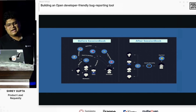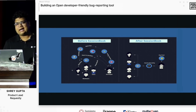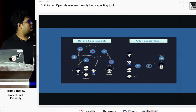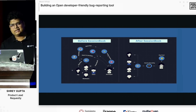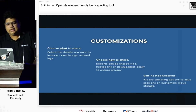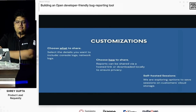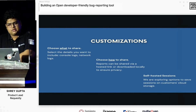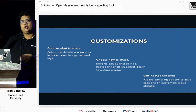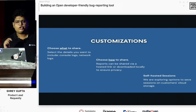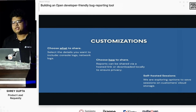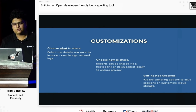We realized that bug reporting was very difficult and had a lot of hassles across multiple channels. With Session Book, we tried to simplify that and the process is no longer that stiff. In terms of customizations, we offer a lot of flexibility — you can choose what to share. You can only share the recording, the video part, or you can also share the console and network errors. It totally depends on the particular use case you're recording the session for.